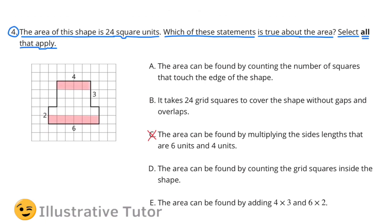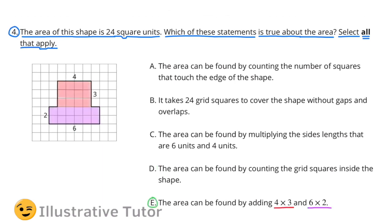C does not apply. Even though 6 times 4 does equal 24, you would need to multiply the base times the height of quadrilaterals to find the area. In example C, they're multiplying two bases times one another. Example D is correct — the area can be found by counting the grid squares inside the shape; there are 24 grid squares inside. E applies because the area can be found by adding 4 times 3 and 6 times 2. I've identified two quadrilaterals within this shape: one with dimensions 4 times 3, and the second with dimensions 2 times 6. 4 times 3 is 12, and 2 times 6 is 12; 12 plus 12 is 24 units.